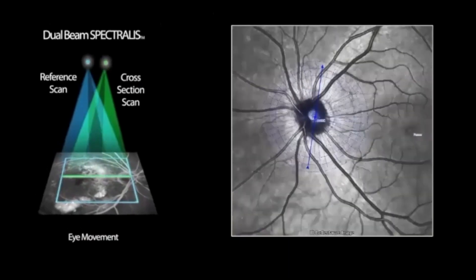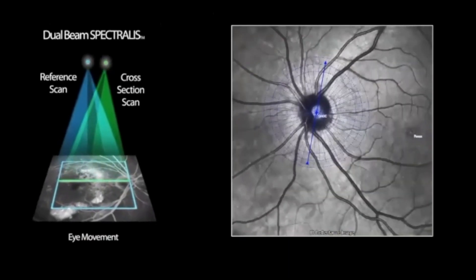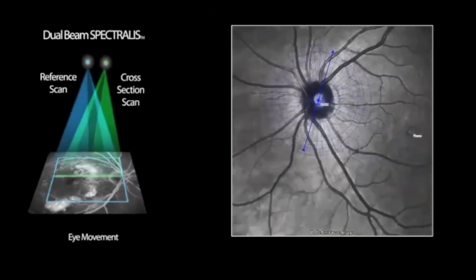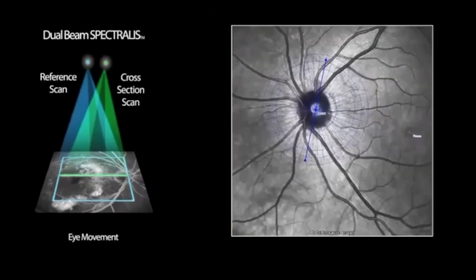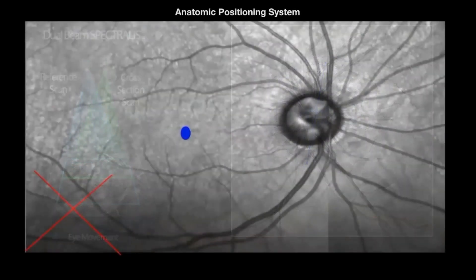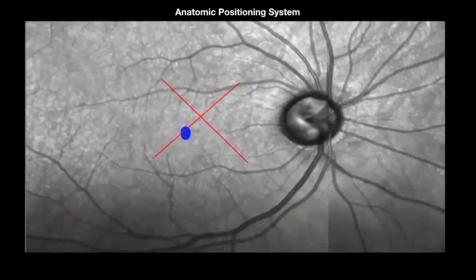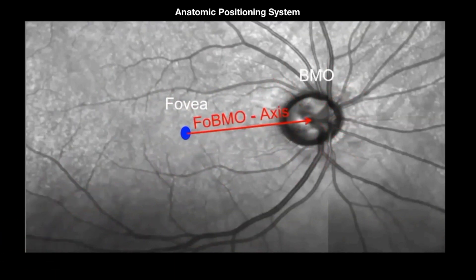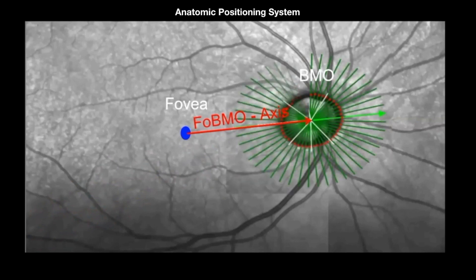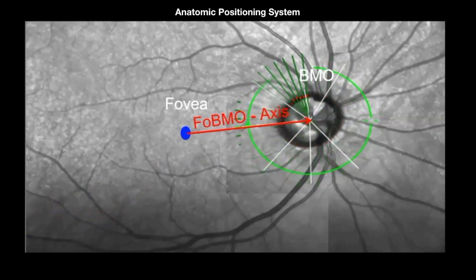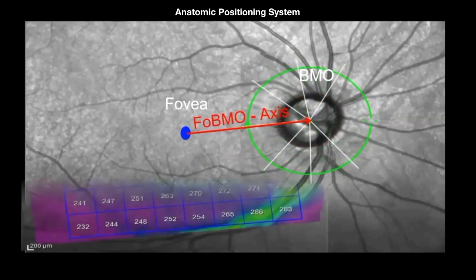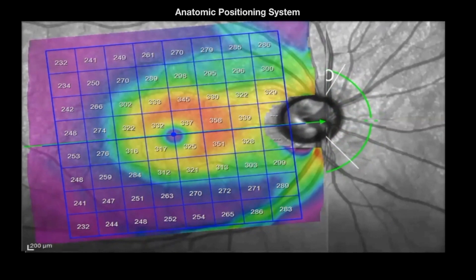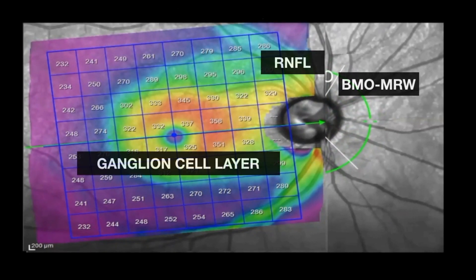With Spectralis, there is a dual beam scanner to detect minute eye movements during performance. With Glaucoma Module Premium Edition, the same piece of tissue is examined during follow-up, which is very important for detecting glaucomatous progression. With the anatomic positioning system, first the foveal centration is marked, then the BMO centration is marked, then the fovea-BMO axis is plotted, followed by the 24-line scan examining 48 BMO positions, the circular scan examining RNFL thickness, and finally examination of the ganglion cell layer.